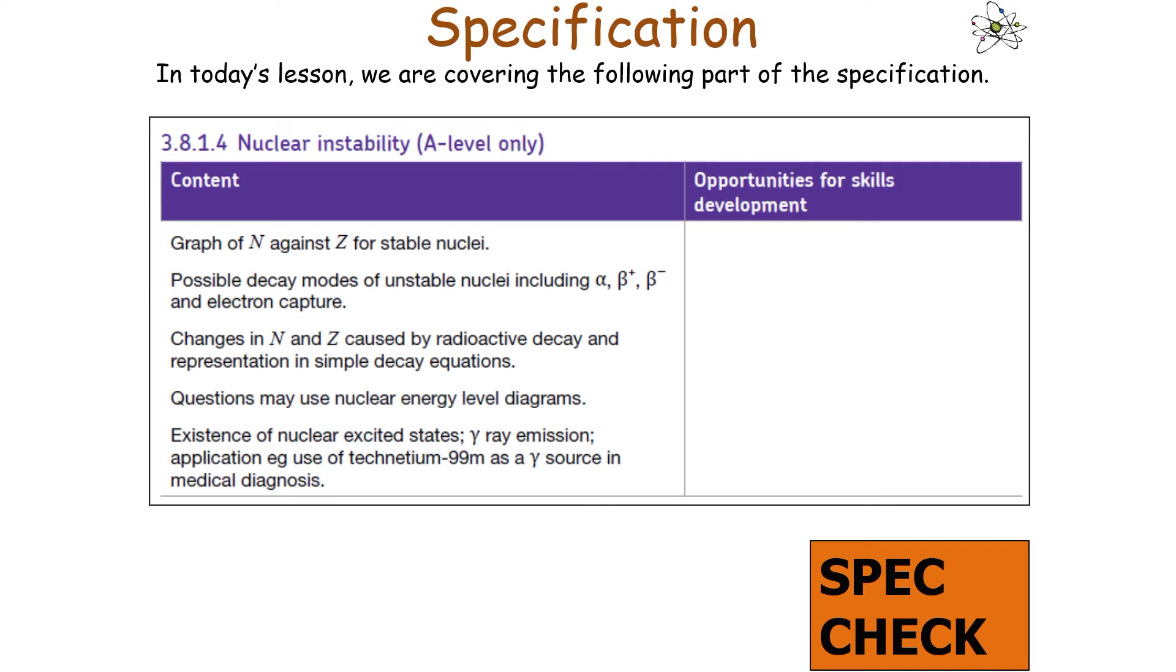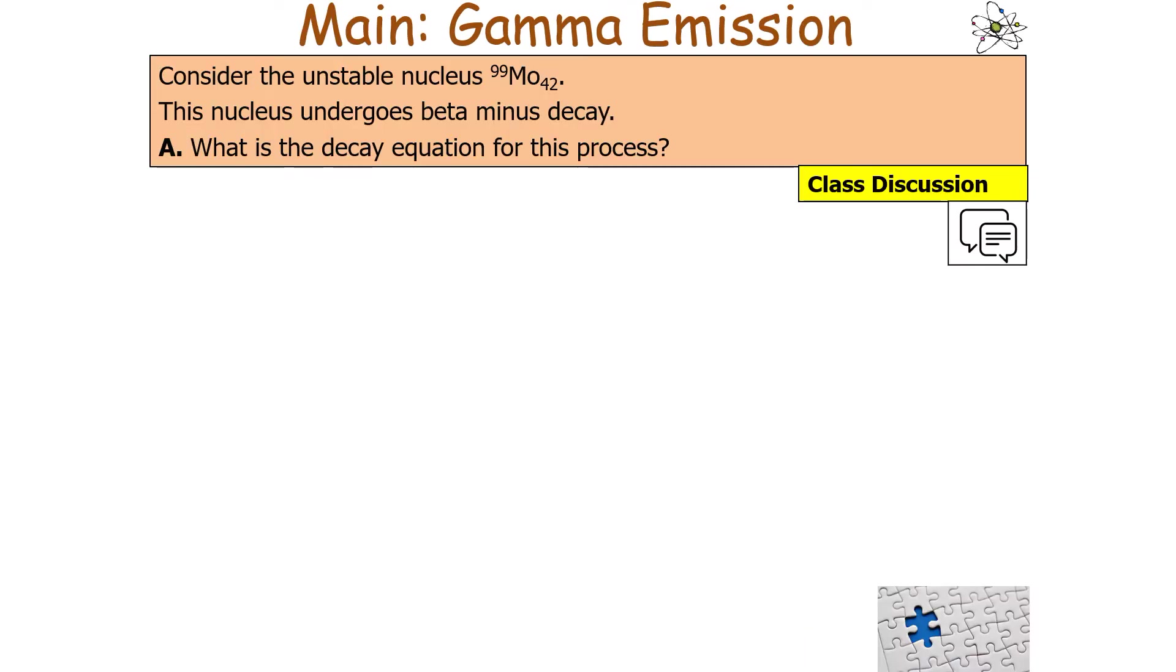We're going to look at nuclear instability. Let's consider the unstable nucleus 99Mo42. This nucleus undergoes beta minus decay. What would our decay equation be for this process?